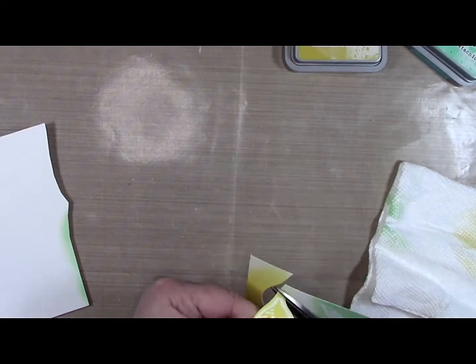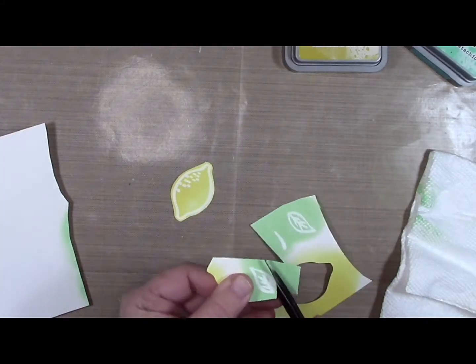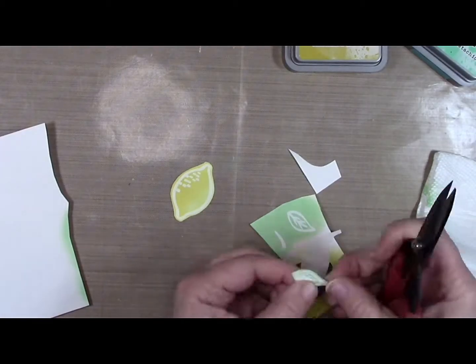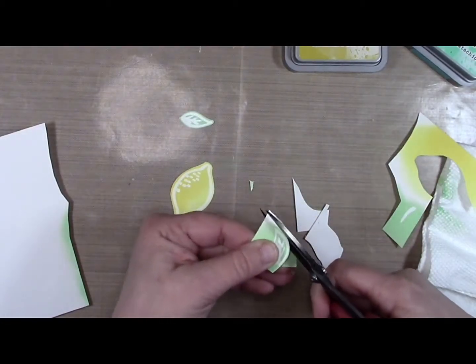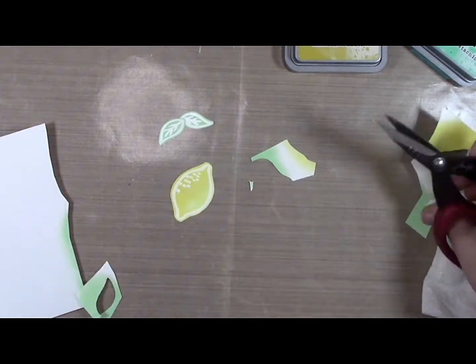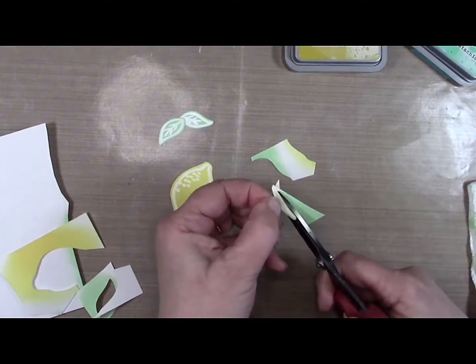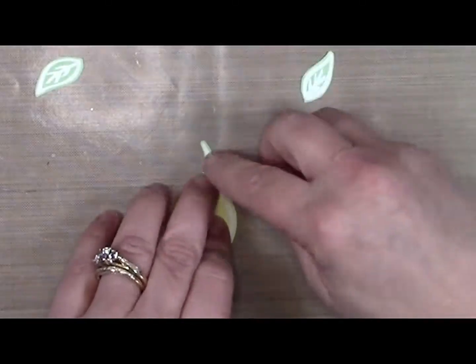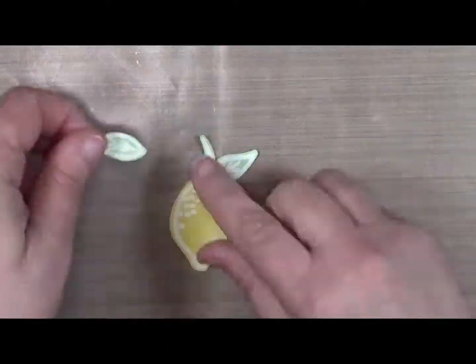Then I'm using the Cracked Pistachio for the leaves and stem. The whole stem is actually embossed white, but I just trimmed around the edges leaving some of the green around it so that it gives the impression of being green. And then I'm going to put it together, just gluing the leaves and stem to the lemon itself. I'll use it on the top of my window on the card.